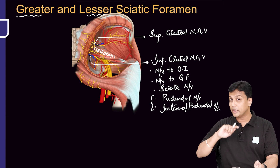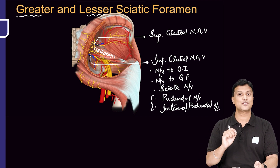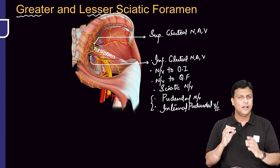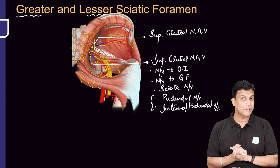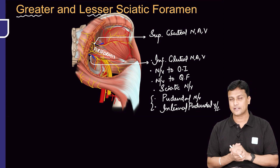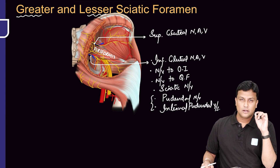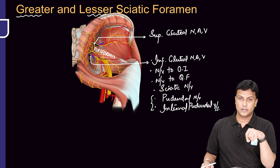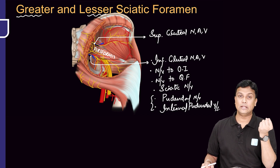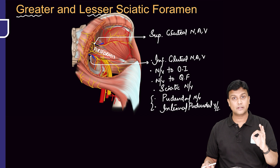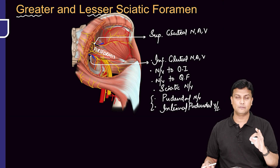Now why do we have to know this for your exams? Because, my dear friends, remember the pudendal nerve block. The pudendal nerve is the main nerve supplying to your perineum region. Suppose if you have to block this nerve — pudendal nerve block — the only site where you can block it will be the ischial spine.